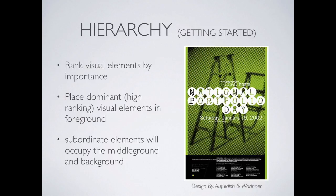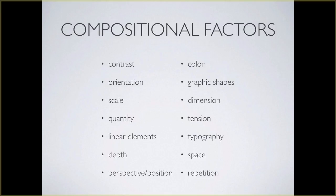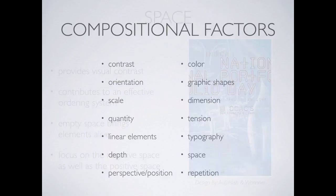High-ranking visual elements occur in the foreground. Less important elements go toward the background. Subordinate elements will occupy the middle ground and also the background. Compositional factors — one of the things on this list is something we spent a whole lecture talking about last class. It's still important — don't forget it.